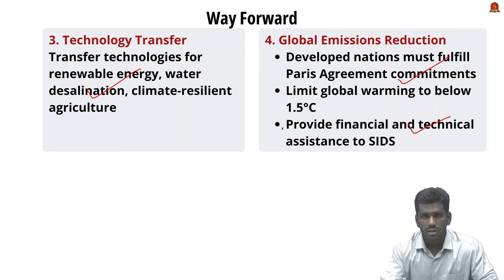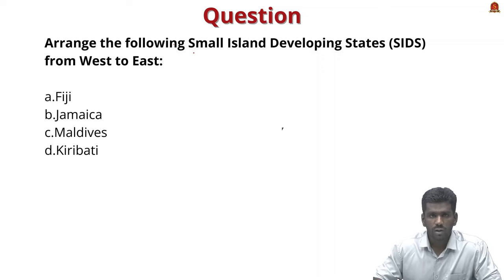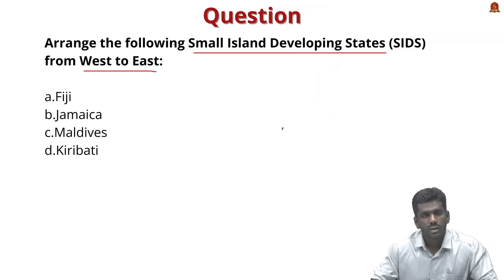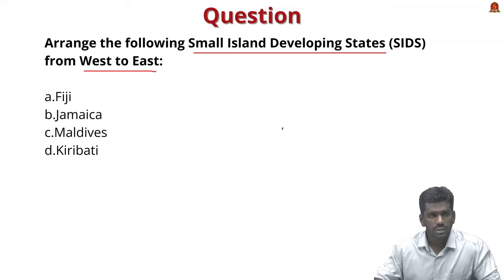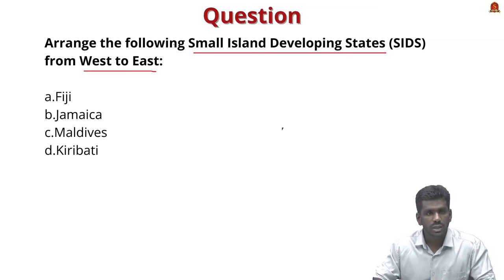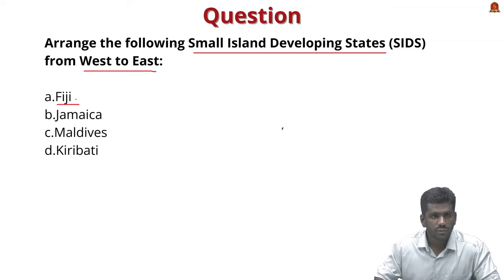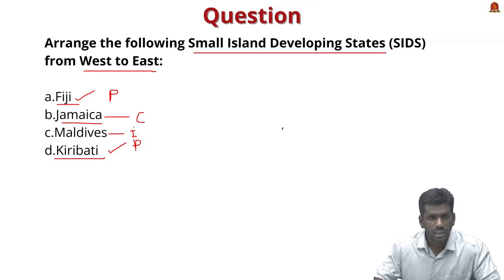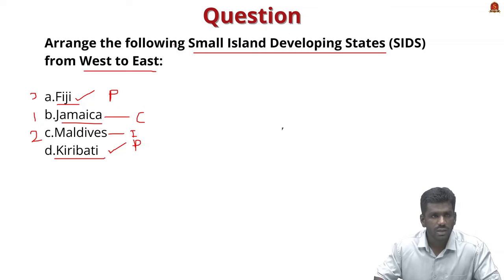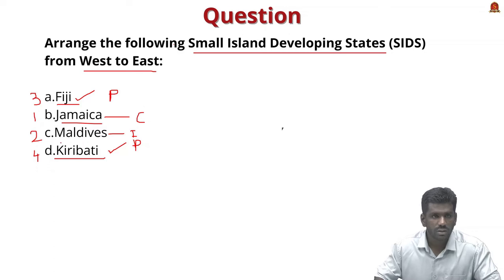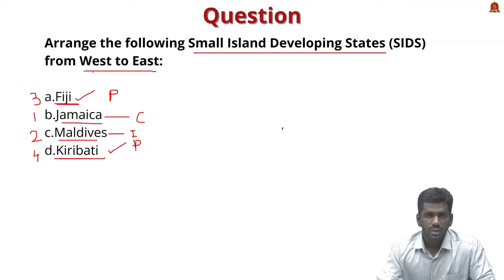MCQ — arrange the following small island developing states from west to east: Fiji, Kiribati, Jamaica, Maldives. This is a map-based question. Jamaica is in the Caribbean Sea; Maldives is in the Indian Ocean; Fiji is in the Pacific Ocean (western side); Kiribati is also in the Pacific Ocean (eastern side). Therefore, the correct west-to-east arrangement is: Jamaica, Maldives, Fiji, Kiribati.